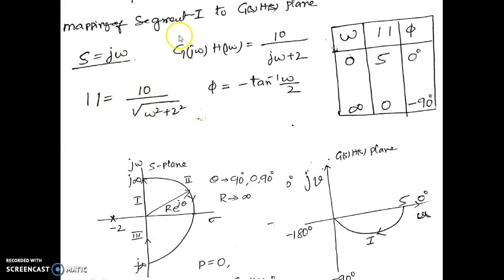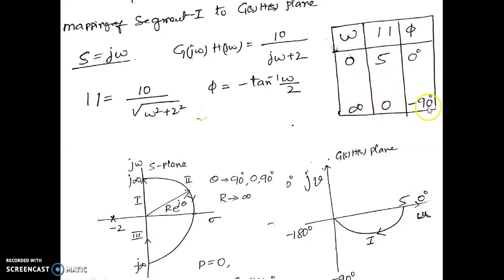The first segment corresponds to the portion of the Nyquist contour along the imaginary axis. Substituting s equals j-omega, we obtain the magnitude and phase equations. The corresponding values of magnitude and phase as omega ranges from 0 to infinity are evaluated. When omega is 0, the magnitude is 5 at an angle of 0 degrees, and as omega increases the phase reaches minus 90 degrees. This variation maps the contour in the S plane—a straight line from 0 to infinity—onto the G(s)H(s) plane.